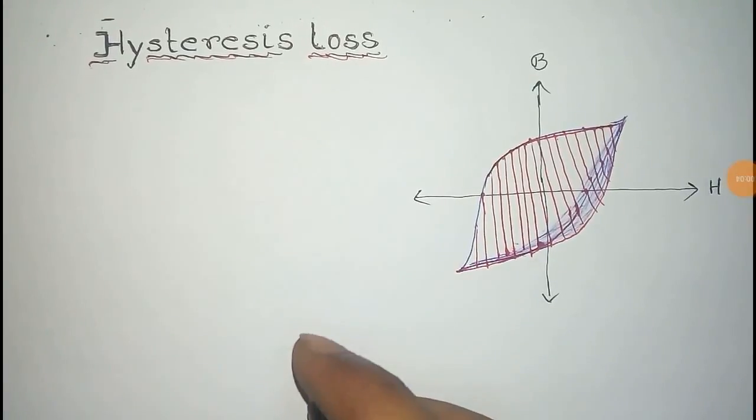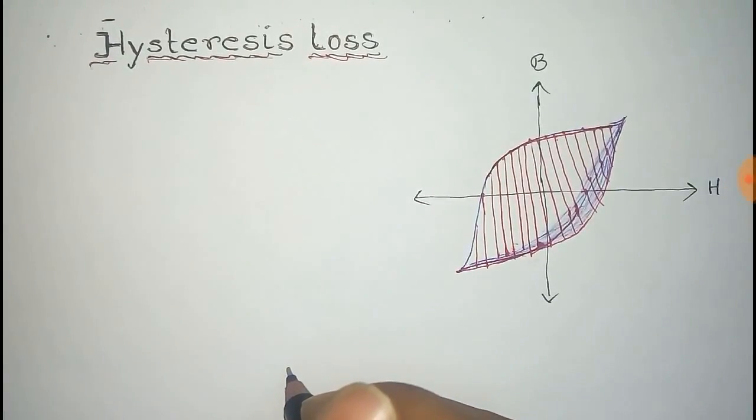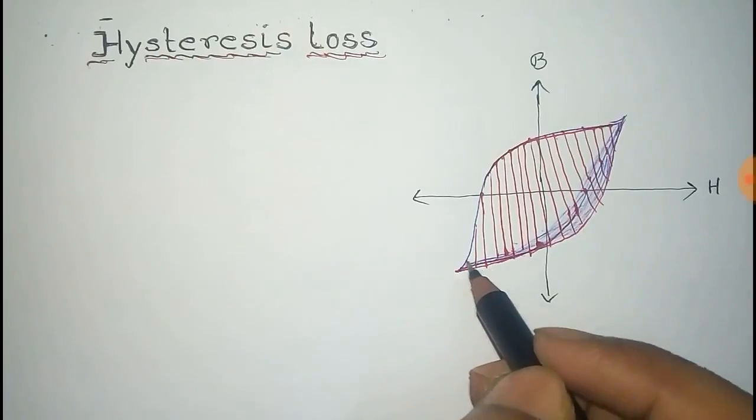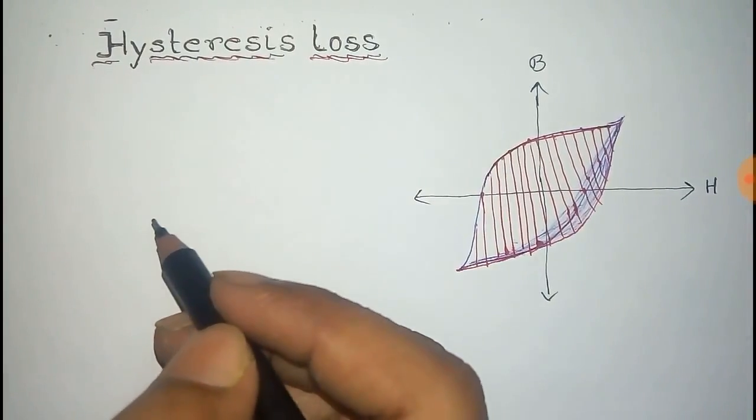When magnetic field is increased, energy is supplied to the core. And when field is decreased, the core returns the energy to supply. However, some energy is lost in this process.